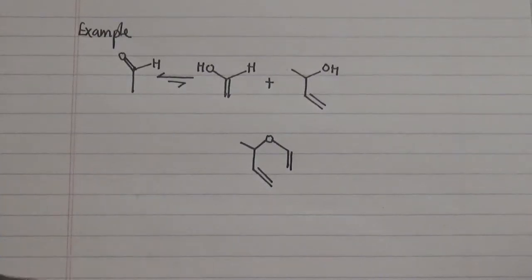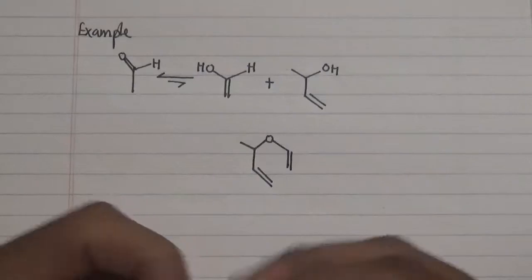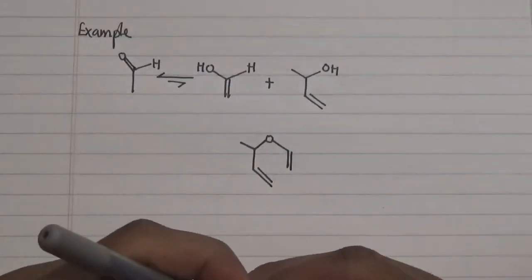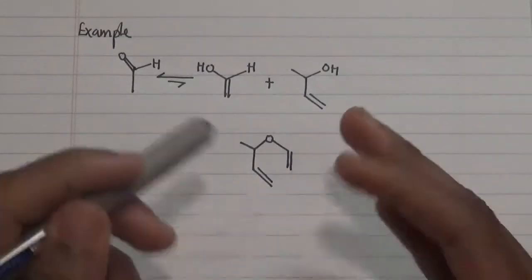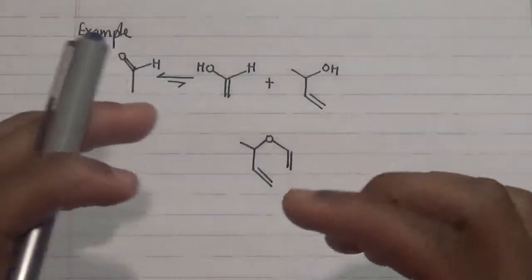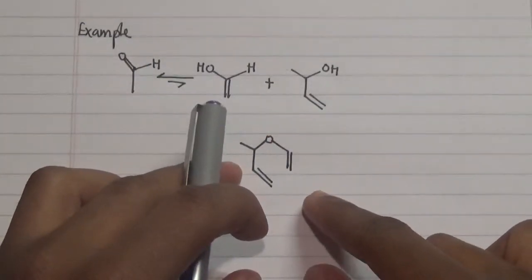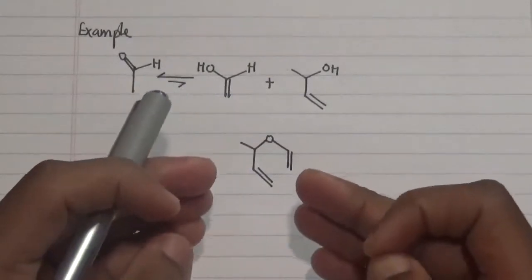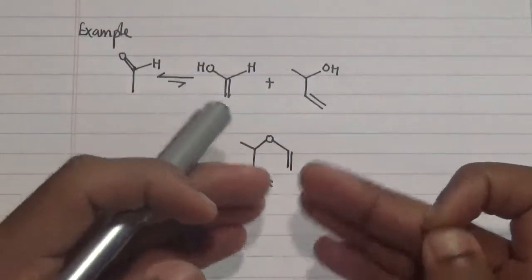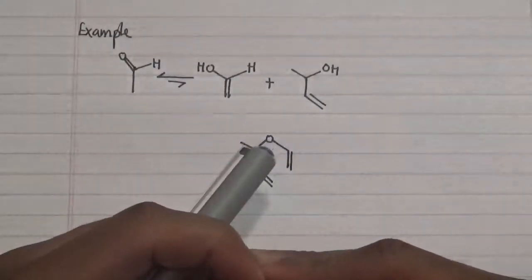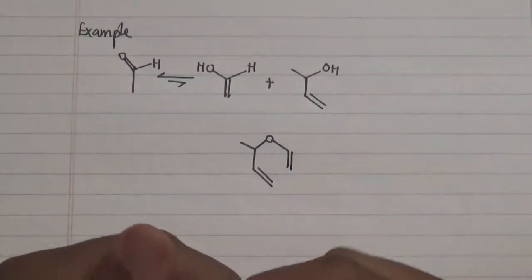Hello everyone, welcome to my channel. I'm excited to be back and talk to you more about the [3,3] sigmatropic reaction. This is a specific way by which you can generate a reagent that is really crucial for understanding how to perform [3,3] sigmatropic reactions or rearrangements.